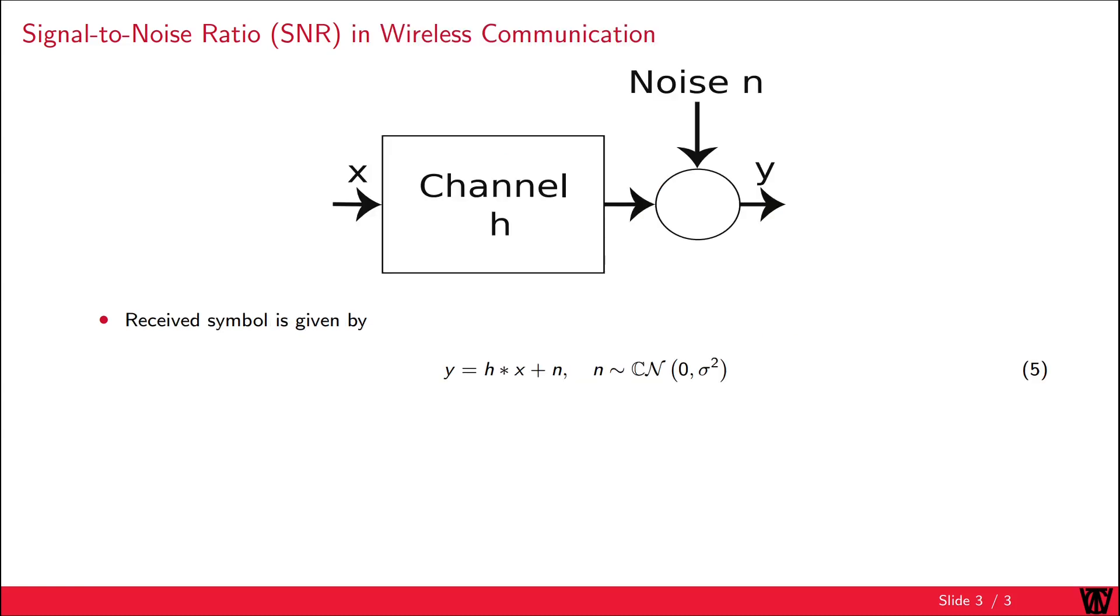In the figure you can see a simple model of an additive white Gaussian noise channel. The transmit symbol X is transmitted over the channel H. At the receiver we receive Y with an additive noise component.